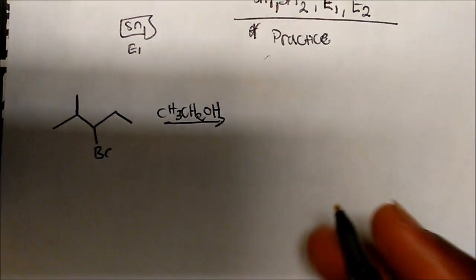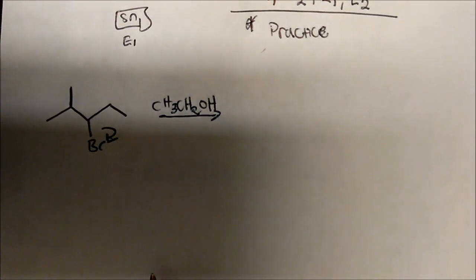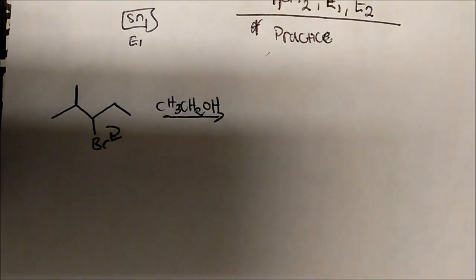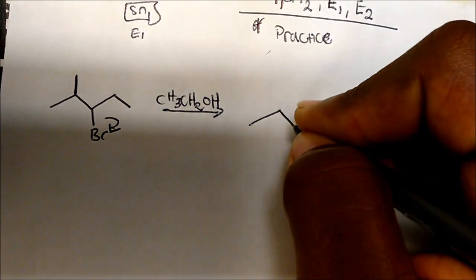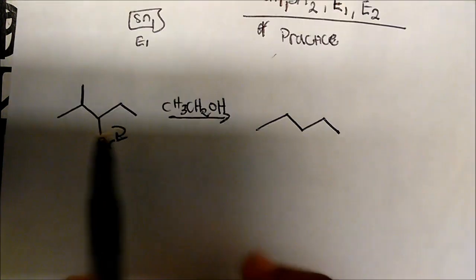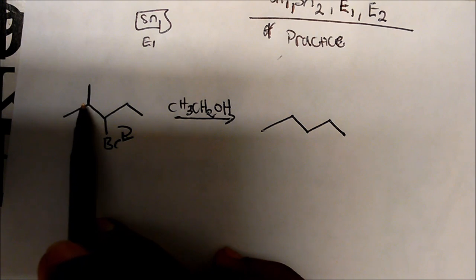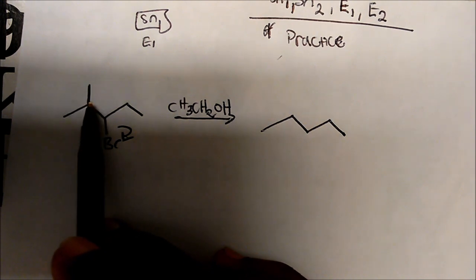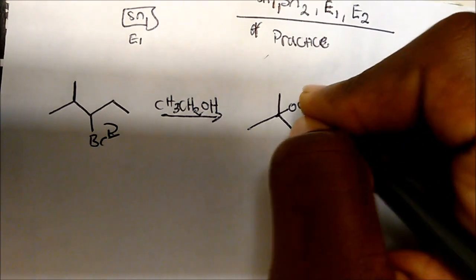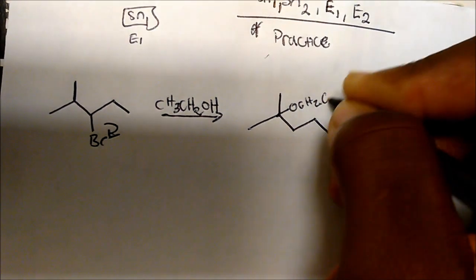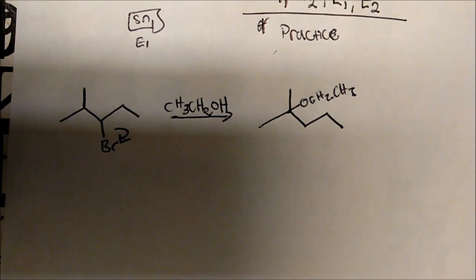This will probably not undergo elimination because it's a weak base. So I would say this will undergo SN1 — secondary alkyl halide, weak base, weak nucleophile. So this bromine has to leave first. The bromine will leave, and we're going to have a secondary carbocation. We can do a 1,2-hydride shift and get the ether. So the product of this reaction looks something like this — it will get an ether. This is prime for SN1.